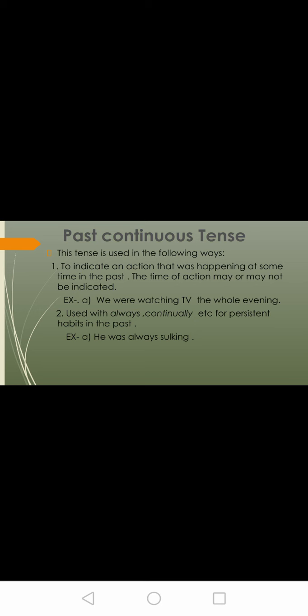To indicate an action that was happening at some time in the past — the time of the action may or may not be indicated. For example, we were watching TV the whole evening. This was happening at some time in the past; it is over now but was continuous for some time.